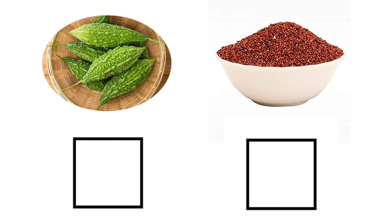Third one — bitter gourd. Bitter gourd is a vegetable, so we have to put V.